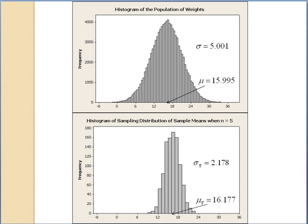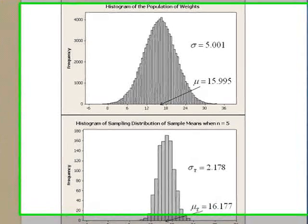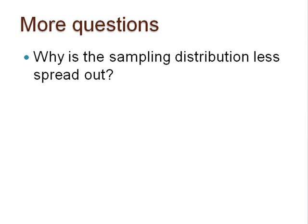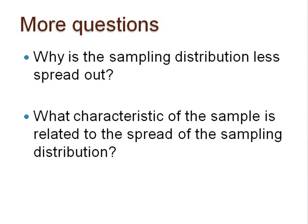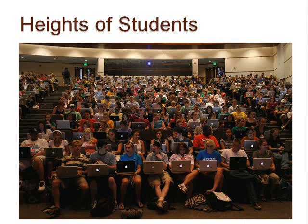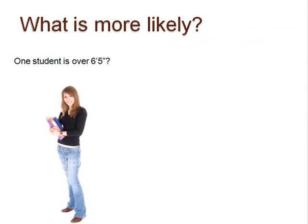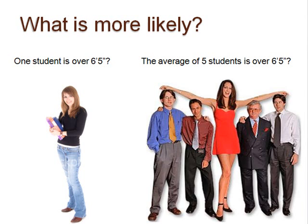The questions now are: why is the sampling distribution less spread out, and what characteristic of the sample is related to the spread of the sampling distribution? Pause here to reflect on these questions. Thinking about the first question, consider a lecture hall full of students. Which of the following is more likely to occur: randomly selecting one person from that group who is over 6 foot 5 inches tall, or selecting a sample of 5 students at random whose mean height is over 6 foot 5 inches tall?